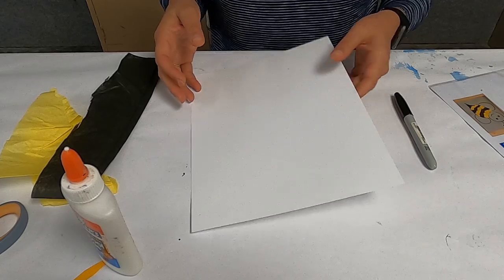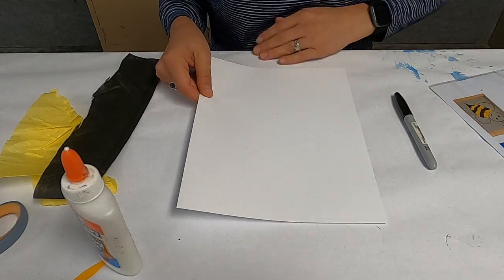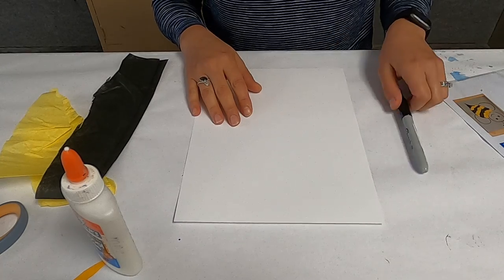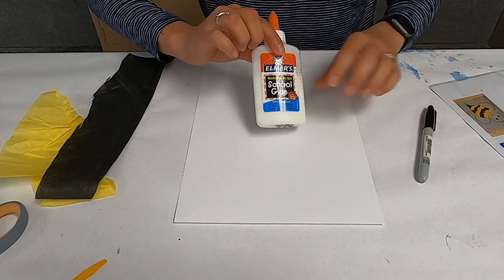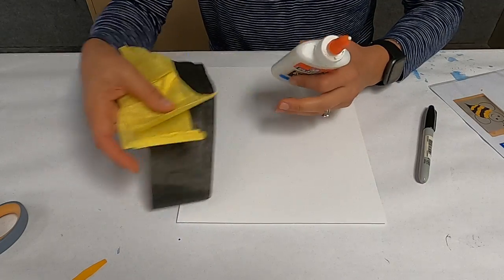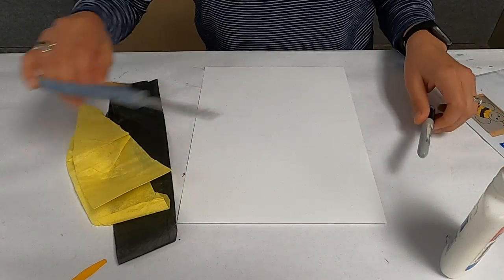So you need to get a thick piece of paper. I'm using some cardstock here, any color you want. I just chose white. A marker, some school glue, and some black and yellow tissue paper. And you might need some scissors as well.